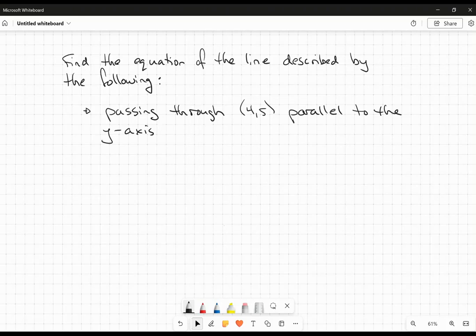Okay, hi everybody. So in this video we're going to do a little bit of coordinate geometry. We're going to find the equation of the line that passes through the point (4,5) and is parallel to the y-axis.